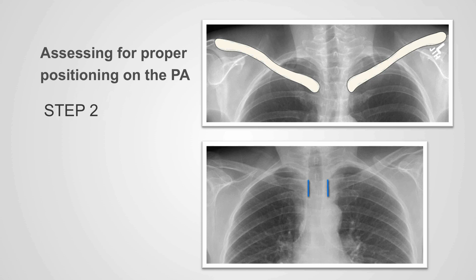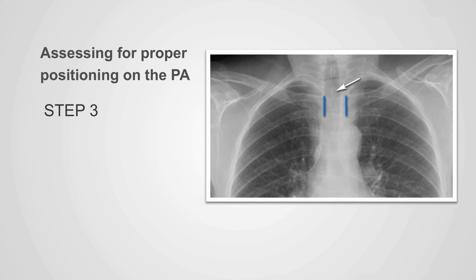Next, we identify the medial end of both clavicles. The clavicles are easy to identify and I've highlighted them with this illustration. We identify the medial aspect of both clavicles. The spinous processes will look like oval densities within the midline of the body. The patient will be well positioned if the distance between the spinous processes and the medial aspect of the clavicles is equal on both sides.